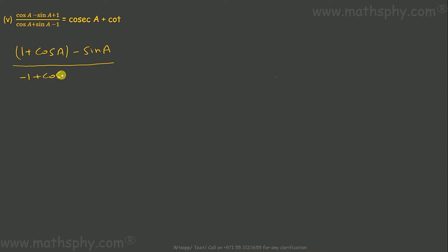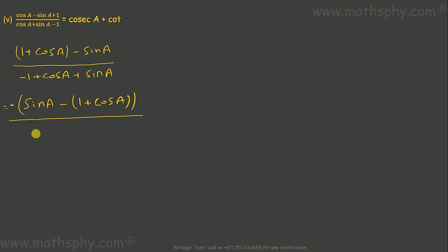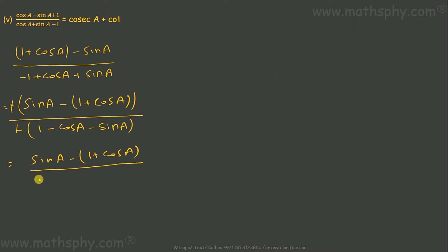Plus cos a plus sin a. If I take minus common from both sides, this goes plus sin a. Minus 1 minus cos a minus sin a — minus minus cancelled. So I have now sin a minus 1 plus cos a. I have 1 minus cos a minus sin a. Now let's multiply this.